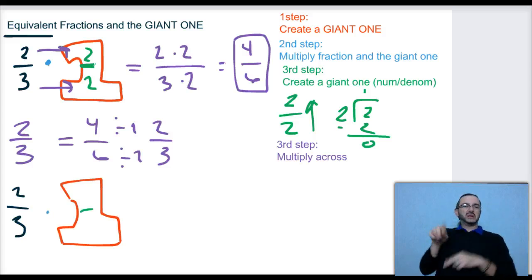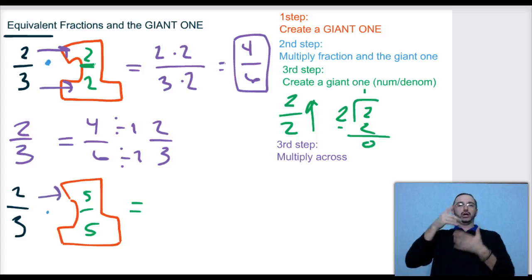And this time, instead of using 2/2, I'm going to try 5/5. Again, it doesn't matter what number I use. I'm going to multiply across.